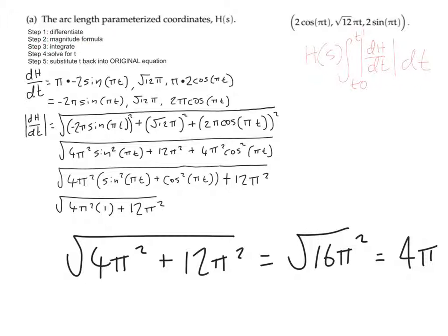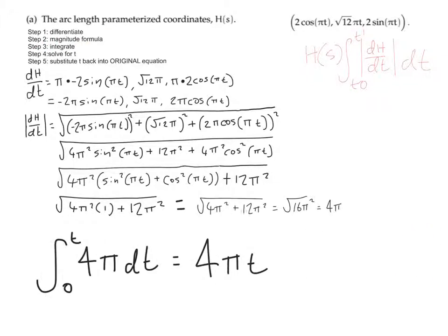Now we integrate 4π with respect to t: ∫4π dt = 4πt. That's step 3 done. Now step 4: solve for t. We rearrange to get t on its own.